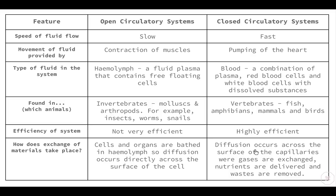Open circulatory systems are found in invertebrates such as mollusks and arthropods — including insects, worms, and snails — whereas vertebrates including fish, amphibians, mammals, and birds have closed circulatory systems. Open circulatory systems are not efficient due to the slow movement of fluid and because hemolymph opens into body cavities rather than remaining contained in vessels. These same factors make closed circulatory systems highly efficient, enabling rapid transport of necessary substances.